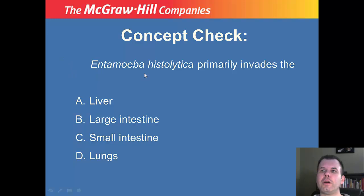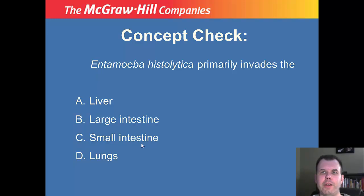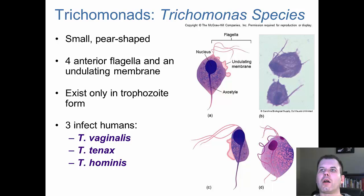Quick review question: which part of the body does Entamoeba histolytica primarily invade — the liver, large intestine, small intestine, or lungs? The answer is the small intestine, because the pH there allows it to release from its cysts. So if you said small intestine, good job.